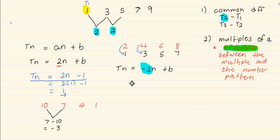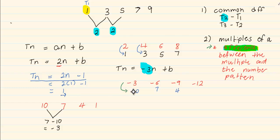Now we're going to write it in multiples of minus 3: minus 3, minus 6, minus 9, minus 12. Then we write the number pattern underneath: 10, 7, 4. What we are looking for is the difference between the multiples and the number pattern. To move from minus 3 to 10, I would have to add 13. To get from minus 6 to 7, I would also have to add 13.